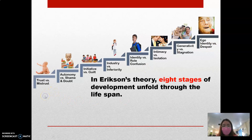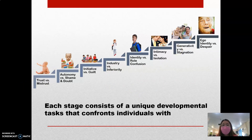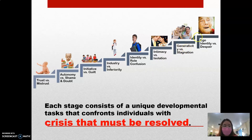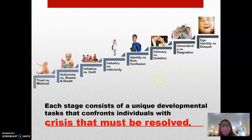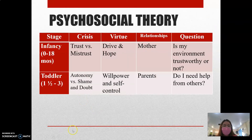According to Erikson, eight stages of development unfold through the lifespan, and each stage consists of a unique developmental task that confronts individuals with a crisis that must be resolved. Let's discuss these specifically — starting with trust versus mistrust — through a table showing the stage, age range, crisis, virtue, relationship, and key question.